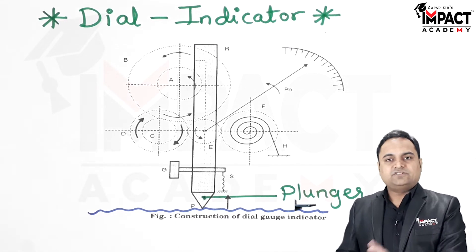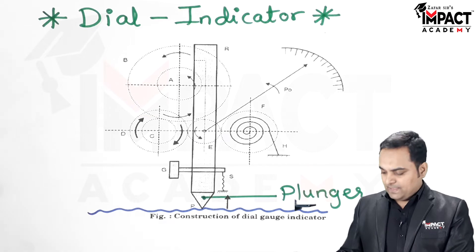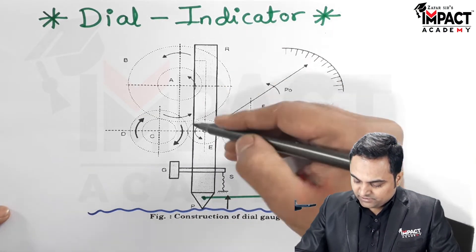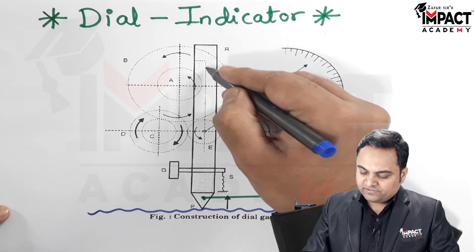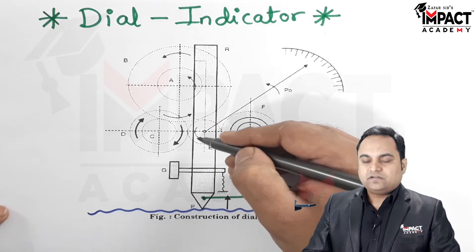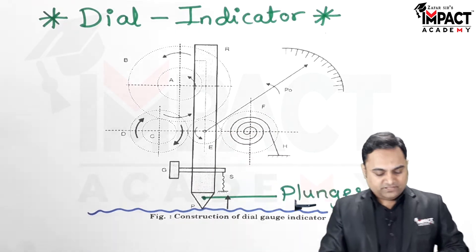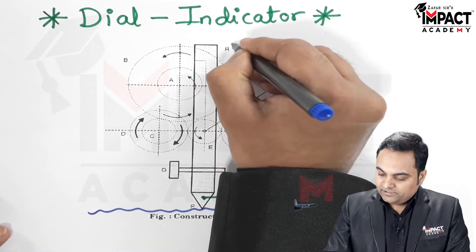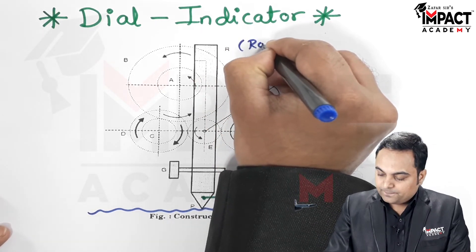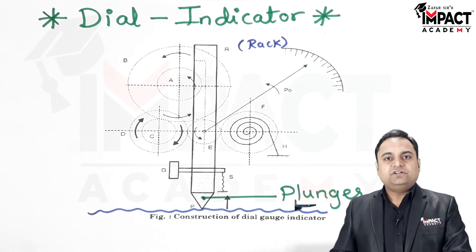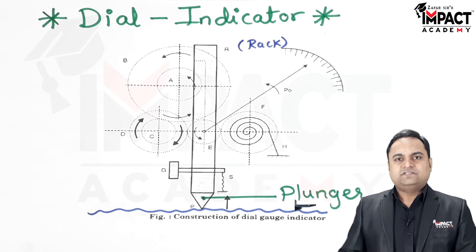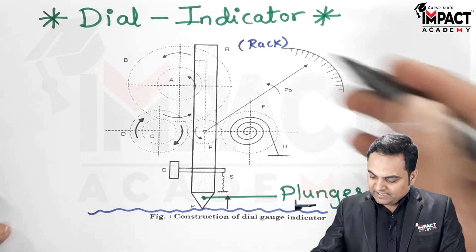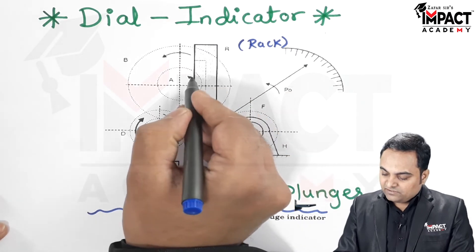After the plunger, the plunger has internal gear teeth cut inside it. These gear teeth are called a rack, denoted by R — also called a linear gear or a gear with an infinite number of teeth. So the plunger carries the rack.